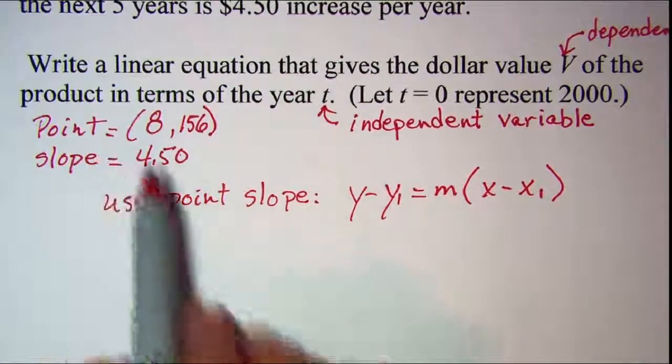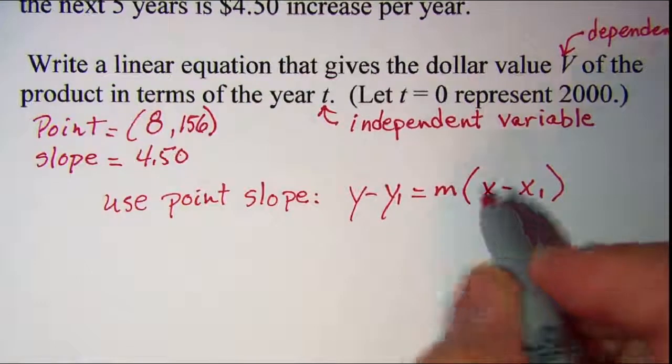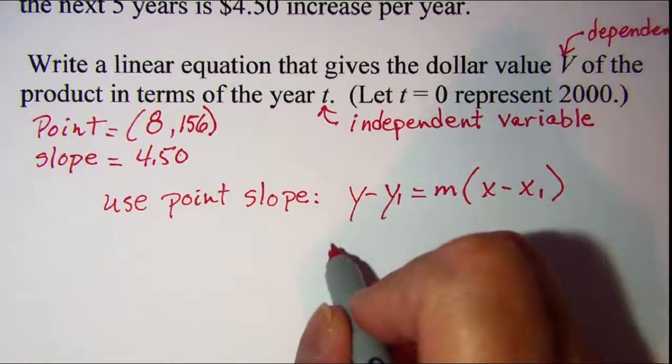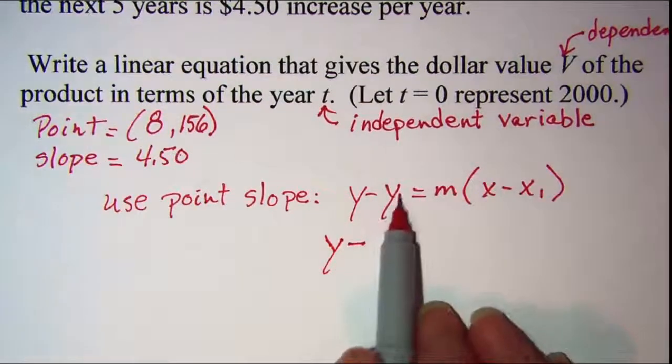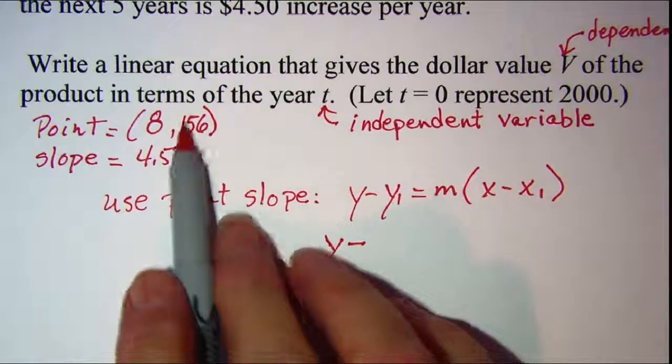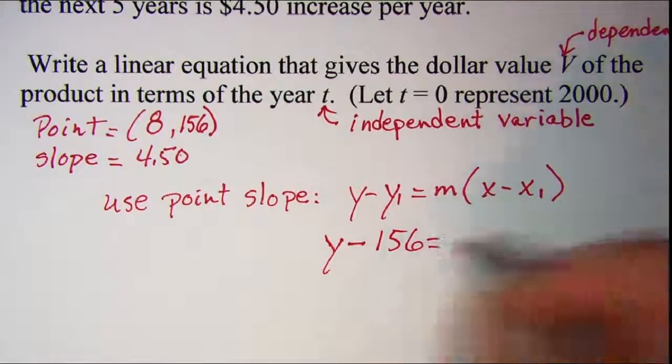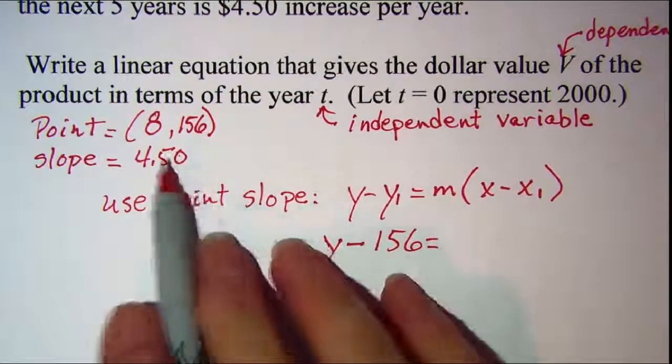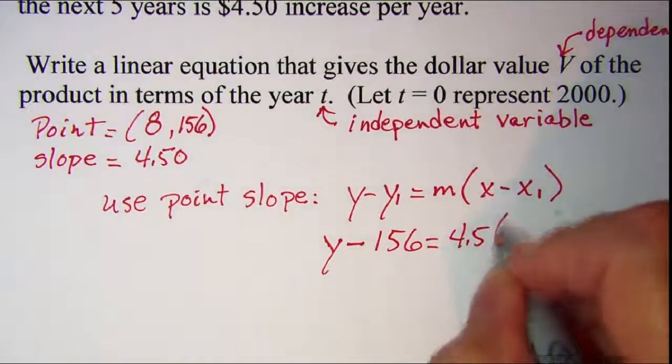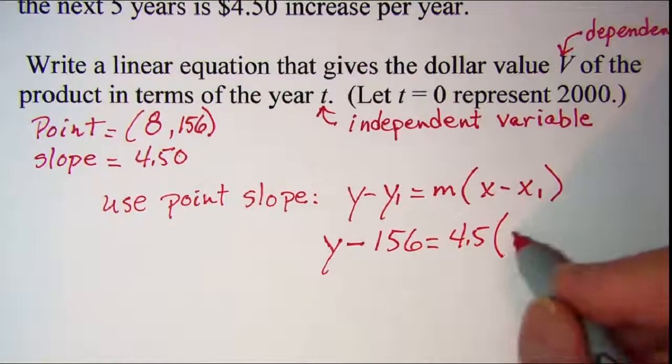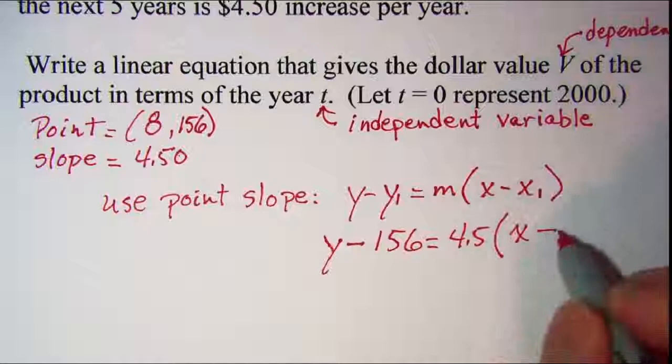Let me just plug these values into my equation. The x and the y are variables so we'll leave them alone. So I'm going to write y minus, and then my y coordinate of my point is 156. My slope m is 4.5, and then x is a variable, and x coordinate of my point is 8.